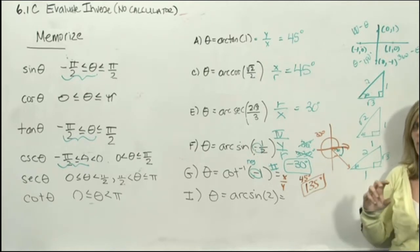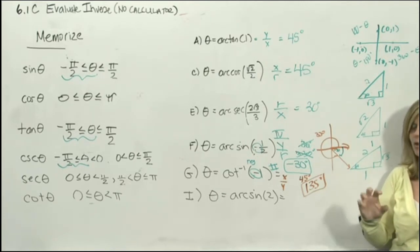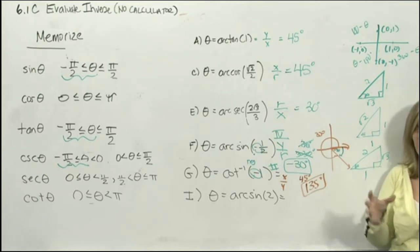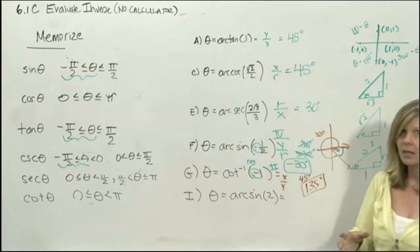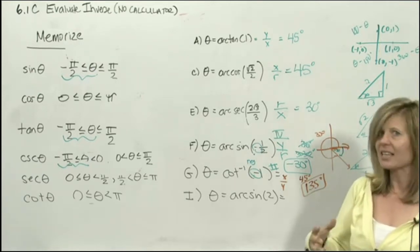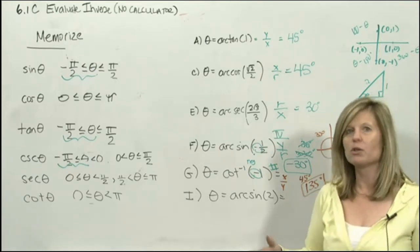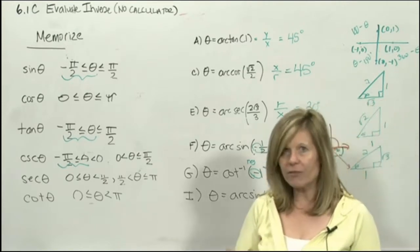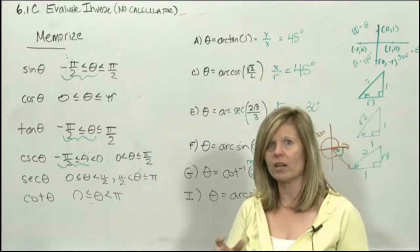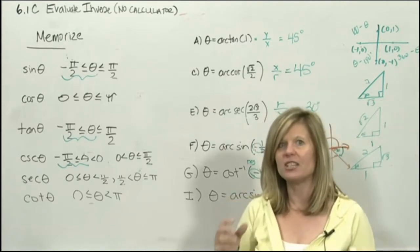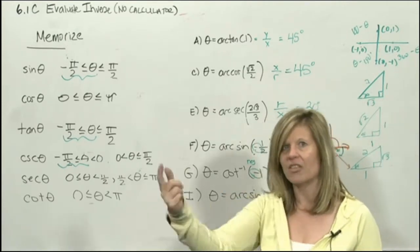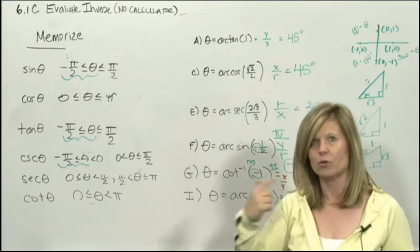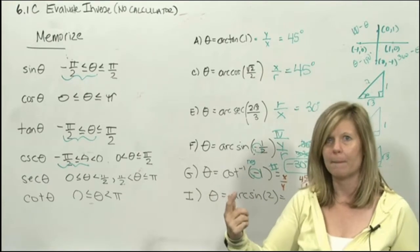So trig inverse is easy when the number is positive — the angle is always in quadrant 1. It's difficult when the number is negative because then you have to determine which other quadrant the angle is in.